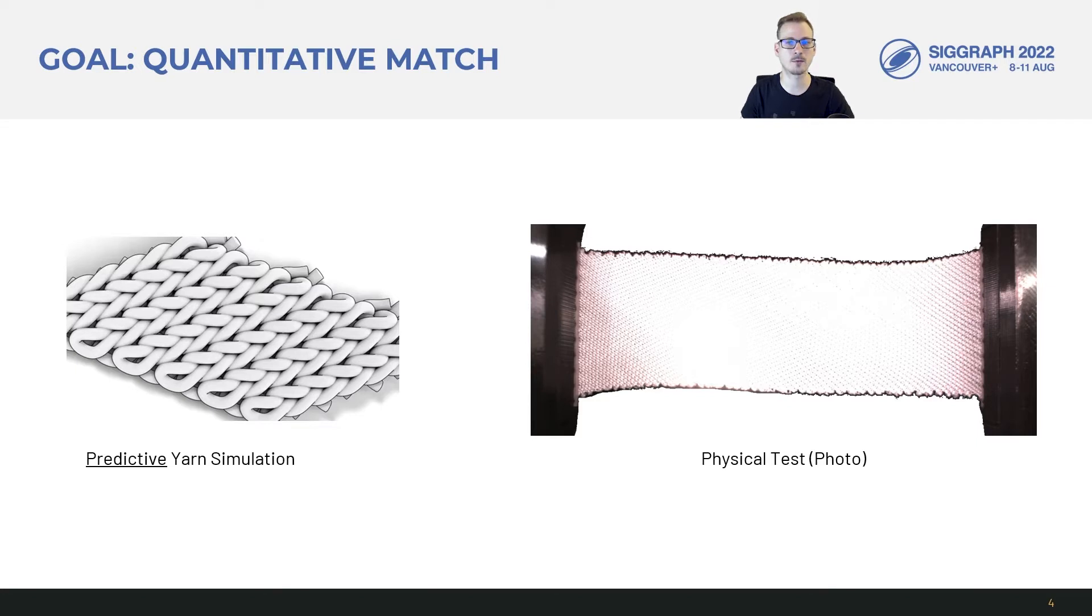However, estimating such models poses some interesting issues. Fitting yarn parameters by directly replicating the physical tests with yarn simulation is non-trivial but also intractable. For example, the yarn simulation on the left would roughly represent only this tiny area in the actual test.